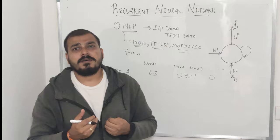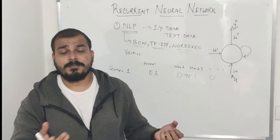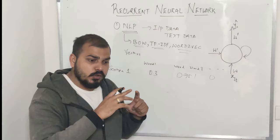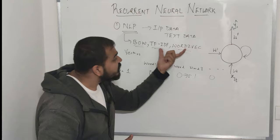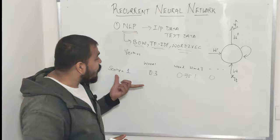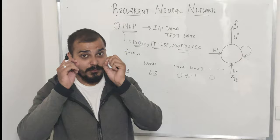Now let me give a good example of where recurrent neural networks are extensively used. Suppose I take an example of Google Assistant or Amazon Alexa. If you ask Amazon Alexa 'what is the temperature outside,' it will tell you the answer in proper sentences. In question-answer applications - chatbots, Alexa, Google Assistant - the sequence information is very very important. If I want to preserve the sequence information, I'll be using a recurrent neural network.